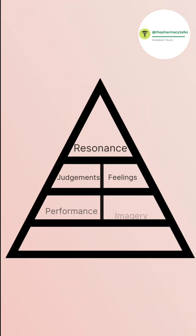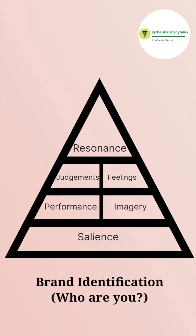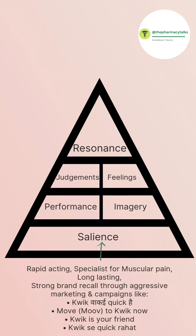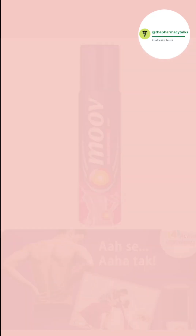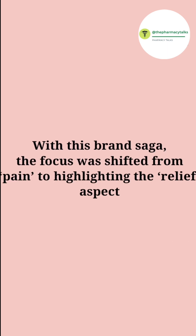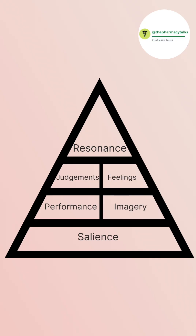The first stage of this model is Salience, which talks about brand identification — simply, who are you? It involves deep and broad brand awareness. For our brand Quick, it is rapid acting and long lasting, especially for muscular pain. We have strong brand recall because of our strong and aggressive marketing. We launched many campaigns such as: Quick vacay quick high, Move to Quick now, Quick is your friend, and Quick say quick rahat. This stage will be different for different brands. For example, Move once launched the campaign 'Ah say aha attack,' where the focus was shifted from pain to highlighting the relief aspect.